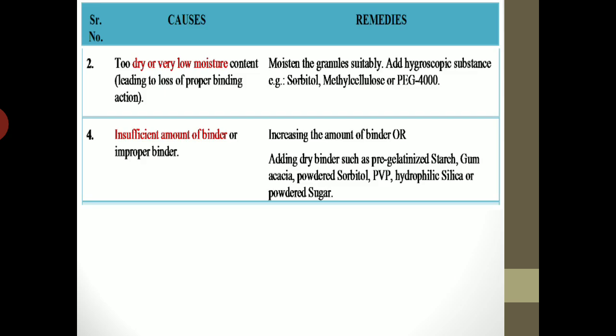In case of incorrect settings, you will need to adjust them — either bring down the scraping blade or bring up the lower punch. The next reason behind capping and lamination is dry or very low moisture content. If the granules do not have sufficient moisture during compression, there will not be sufficient strength in the tablet, leading to capping, lamination, cracking, or chipping. You can increase moisture content or add hygroscopic substances such as sorbitol, methylcellulose, or PG4000.